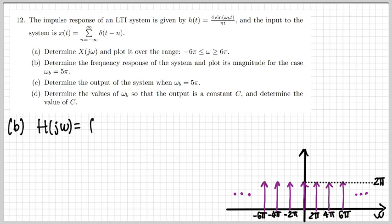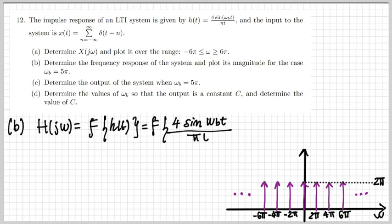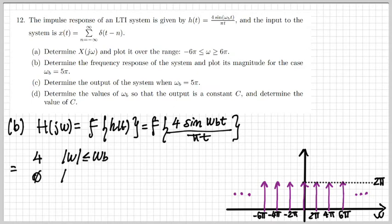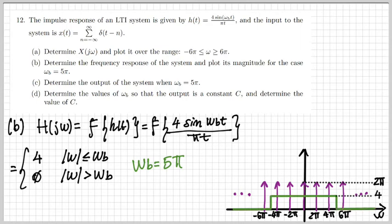In part B, I need to determine the frequency response and plot it for the case ωB equal to 5π. The frequency response is the Fourier transform of the impulse response h of t — the Fourier transform of this sinc function. As we've seen just now, this has a Fourier transform that is a rectangular pulse. In this particular case it's 4 between minus ωB and ωB and zero elsewhere. Here's what it looks like in green: the amplitude is 4 between minus 5π and 5π and zero elsewhere.